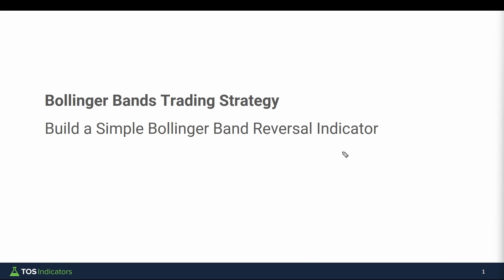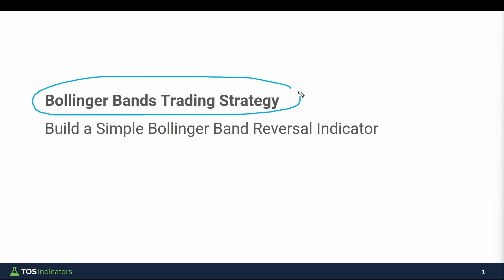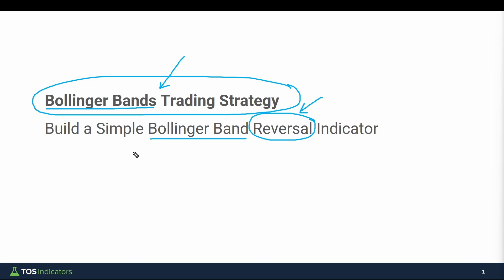In today's thinkorswim tutorial, we'll be building a very simple Bollinger Bands trading strategy. This is probably the most popular Bollinger Bands trading strategy, in which you're looking for price to break outside of either the upper or lower Bollinger Bands, and then you're looking for a reversal. This is a reversion to the mean sort of trade, one of the most popular trading strategies, and it's the first strategy most folks talk about.